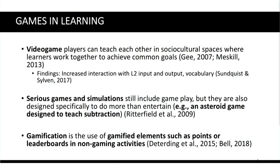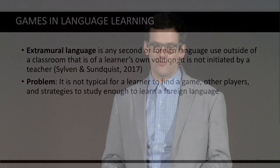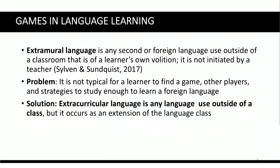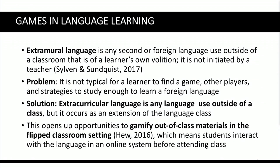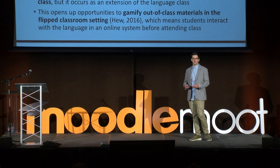Some students engage in extramural learning — going out completely independently of a pedagogical context to learn something — but it's very uncommon, so we can't expect this of our students. Instead, Sylvan and Sundquist (2017) talk about extracurricular language, which is the extension of a classroom: you have some guidance from a teacher and course materials, so when you leave class you can continue language learning with other students in a game-like way. This opens up opportunities to gamify out-of-class materials and flipped classroom settings.